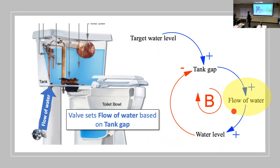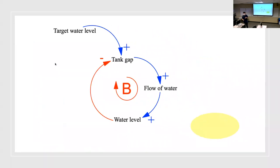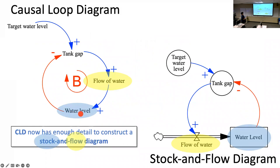Water level will be a stock because it's changing over time. Flow of water will be the force causing it to change — that's the flow. The other things will be converters that help us build the math to make the flow work. The flow makes the water level. This thick line means it's responsible for changing the water level; when the flow is positive, the water level tends to increase.